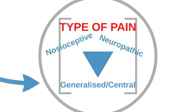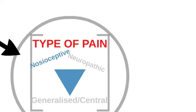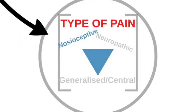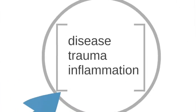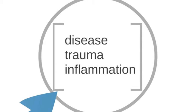There are three types of pain I will talk about: nociceptive, neuropathic, and generalized or central pain. The first type, nociceptive, is our common experience of pain — there's a painful stimulus such as a trauma, an infection, or some anatomic part that has gone wrong. There's a somatic origin to it, and for most people that signifies disease, trauma, or inflammation in relation to that pain.